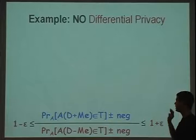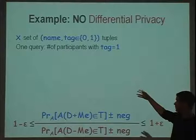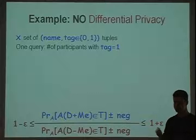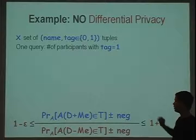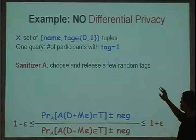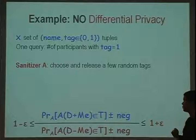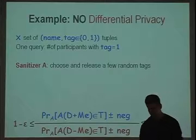Let's go through two quick examples showing how to and how not to get differential privacy. In both examples, we have a database with users, each having a tag of 0 or 1. We want to answer one query: how many participants have tag equal to 1. A bad approach: choose and release a random subset of the tags of users. This is actually great for accuracy, giving a very good approximation of participants with tag 1 versus 0. But for privacy, it's very bad.